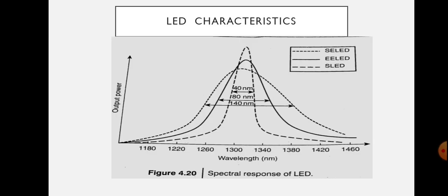Next are the LED characteristics. The figure shows the plot of wavelength versus output power characteristics for different LED types: superluminescent LED (S-LED), surface emitting LED (SE-LED), and edge emitting LED (EE-LED). The superluminescent LED shows higher output power and its spectral width is lower, at approximately 40 nm.